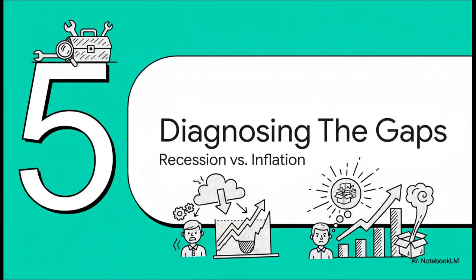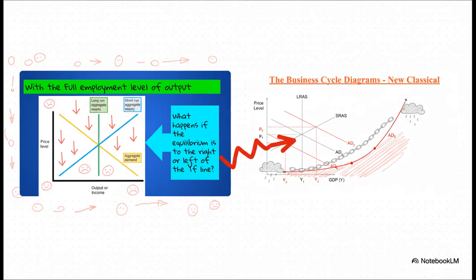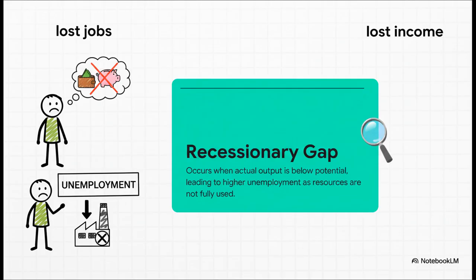Section five: diagnosing the gaps. So we have our two big forces — aggregate demand and aggregate supply. Now comes the cool part: we can put them together and use this model to see what's actually going on when the economy gets sick. Look over on the left — that's a healthy economy, where demand meets supply right where it should be, at its long-run potential. But now look at the right. Let's say total spending — aggregate demand — suddenly drops. That whole demand curve shifts to the left. The new meeting point is way below the economy's potential. That creates what economists call a recessionary gap. A recessionary gap is not just some abstract term on a graph — it's real. It means factories aren't running, businesses aren't hiring, and people are out of work. It translates directly to lost jobs and lost income for real families.